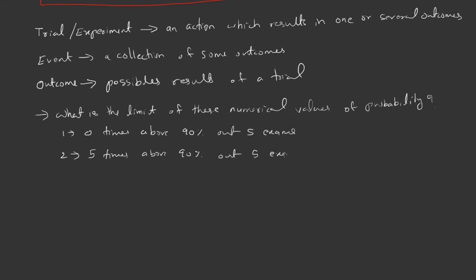In the first case, the probability equals 0/5, which equals zero. In the second case, probability equals 5/5, which equals one. This means that the probability of any event lies between zero and one. Zero is the chance of the event not occurring, and one is the certainty of the event occurring.